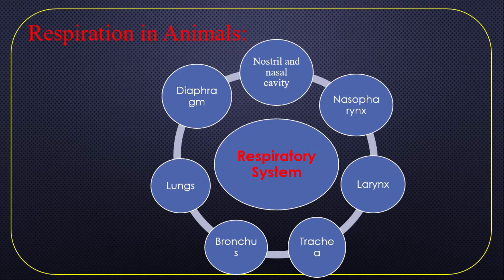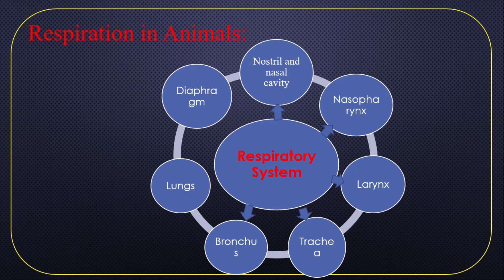The human respiratory system is formed by mainly seven parts: number one, Nostril and nasal cavity; Nasopharynx; Larynx; Trachea; Bronchus; Lungs; and Diaphragm.